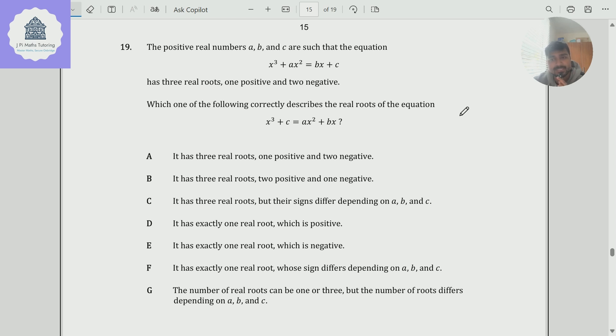We've got the positive real numbers a, b, and c are such that the equation x cubed plus ax squared equals bx plus c has three real roots, one positive and two negative. Which one of the following correctly describes the real roots of the equation x cubed plus c equals ax squared plus bx?